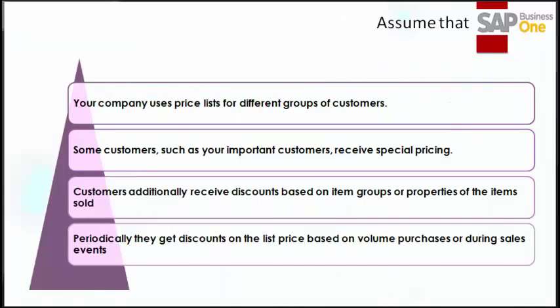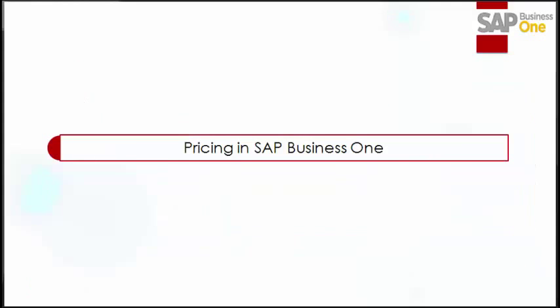Let us assume that your company uses price lists for different groups of customers. Some customers, such as your important customers, may receive special pricing. In addition to these prices, they may also receive discounts based on item groups or properties of the items being sold. Periodically they may get extra discounts on the list price based on volume purchasing or during sales events within SAP Business One.